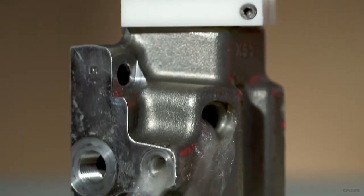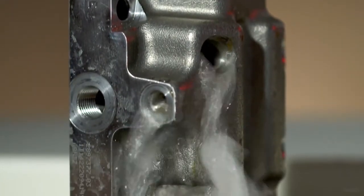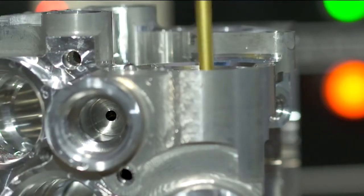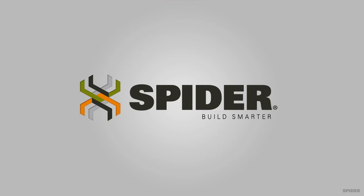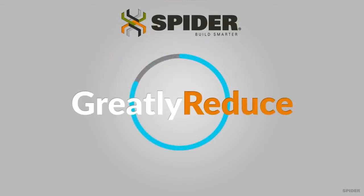That means you can deburr features that were nearly impossible to reach with old manual methods, and you can control the process for radiusing an edge or corner. Depending on the part, Spider ECD can greatly reduce cycle time.